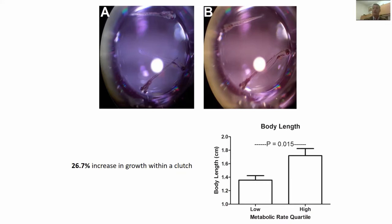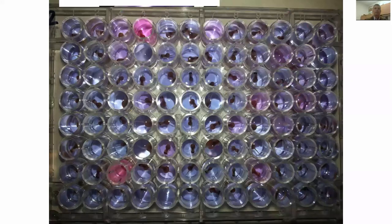When we took fish with the highest metabolic rate and reared them separately from fish with the lowest metabolic rate — the top and bottom quartiles, so the top 24 and bottom 24 fish — at one month we found that body length was higher in high metabolic rate fish than in low metabolic rate fish. Zebrafish have determinate growth so we couldn't continue further, but this gave us hope that by measuring embryonic metabolic rate in zebrafish, we were able to predict growth rate.